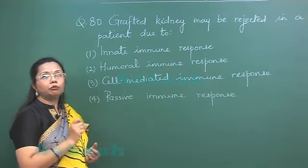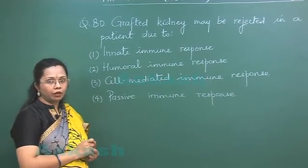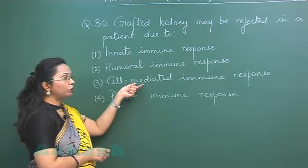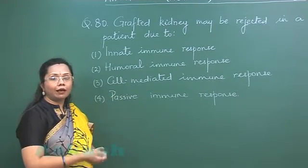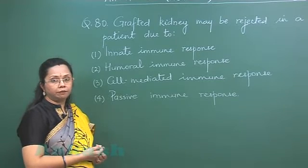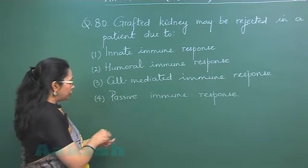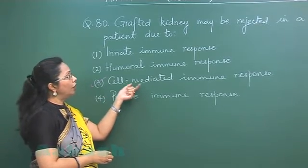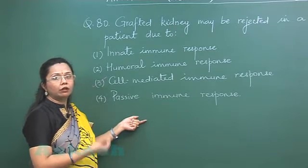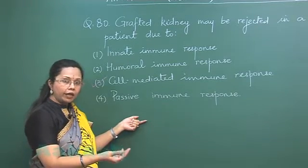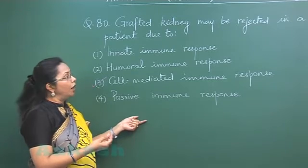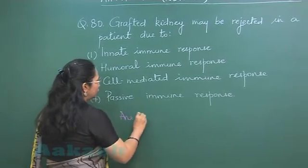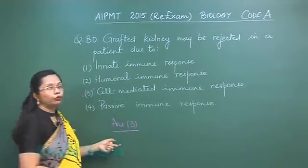Because of that difference, the immune system recognizes the transplanted kidney as a foreign body. This is done by the cell-mediated immune response, and specifically it is the cytotoxic T cells that attack the donor's kidney in the recipient. So the answer is cell-mediated immune response, which is responsible for rejecting an allograft — a graft from another individual of the same species whose MHC is not 100% matching. The answer is option 3.